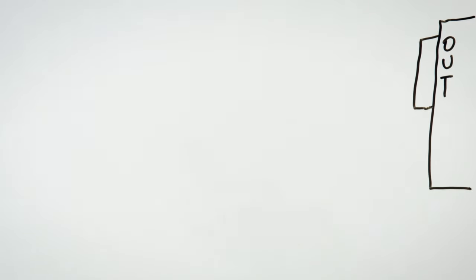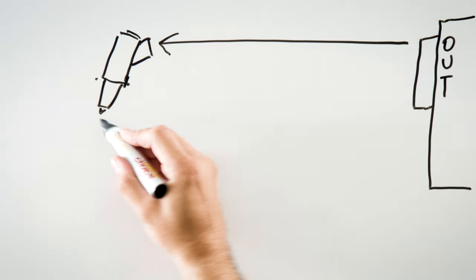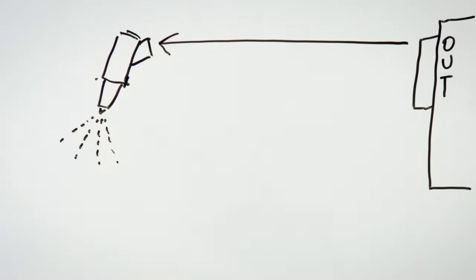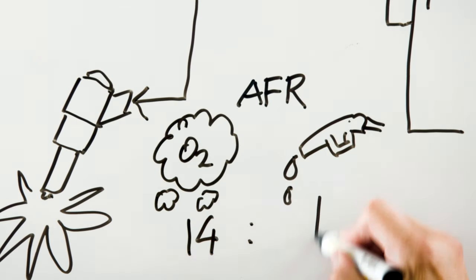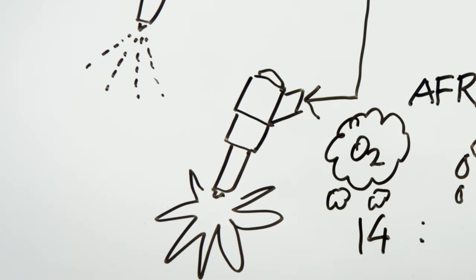We send a signal out to the fuel injectors telling them how much to open and close to allow a metered amount of fuel through into the engine to get our desired target air-to-fuel ratio, or AFR. We also send an ignition output signal out to our ignition coils to fire that coil so that our spark occurs at the right time in order to make the most power.